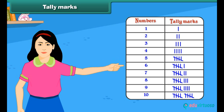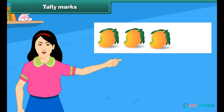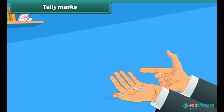While representing 5 objects, 4 vertical lines are drawn and a 5th diagonal line cuts the 4 vertical lines. For example, to count 3 mangoes, we make 3 tally marks. Let's do an activity to prepare a tally chart. Flip the coin and see what side of the coin appears — is it heads or tails?